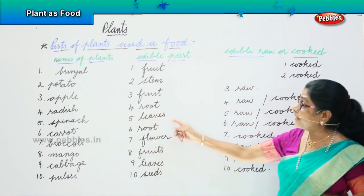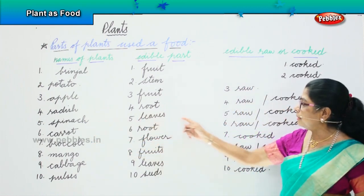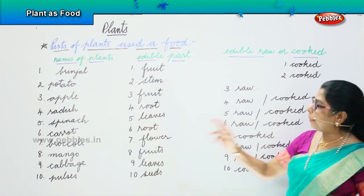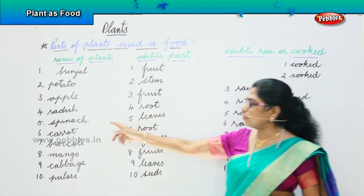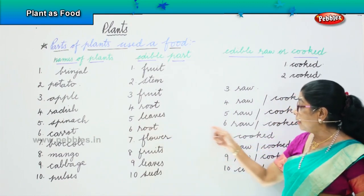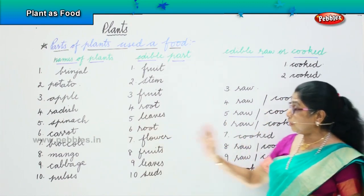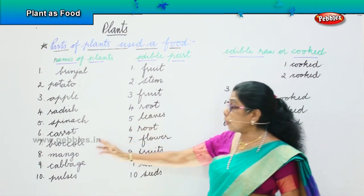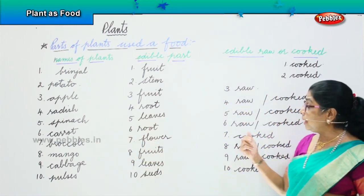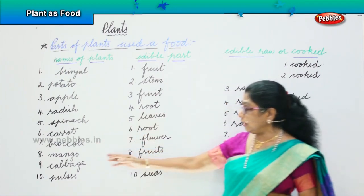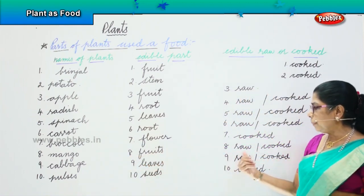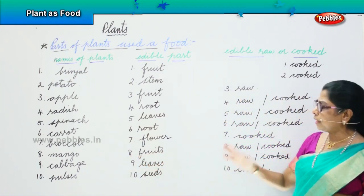Spinach — they are the leaves of a plant and these leaves can be eaten raw or cooked, depends on the kind of spinach. Carrot is the root of the plant and it can be eaten raw and cooked. Broccoli is the flower and it can be cooked and eaten only. Mango is the fruit and it can be eaten raw or cooked.